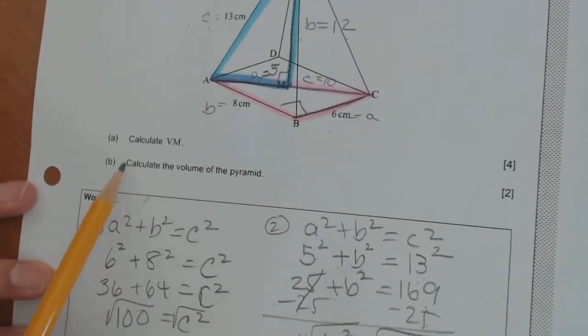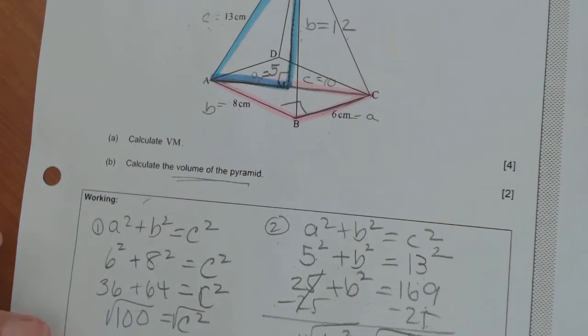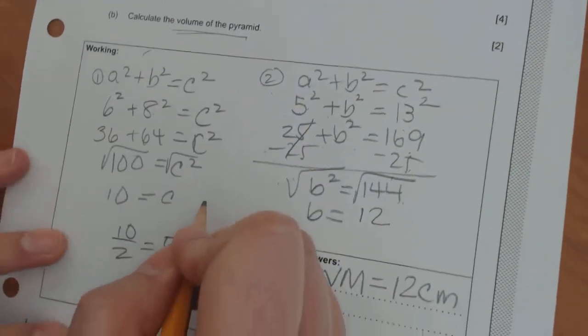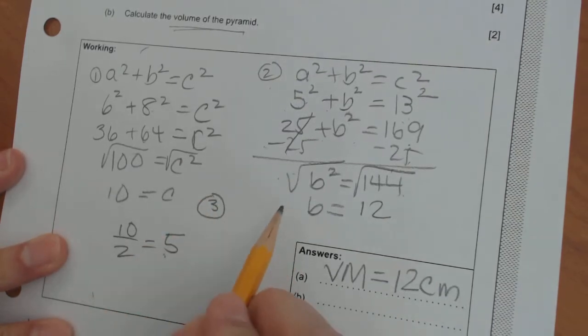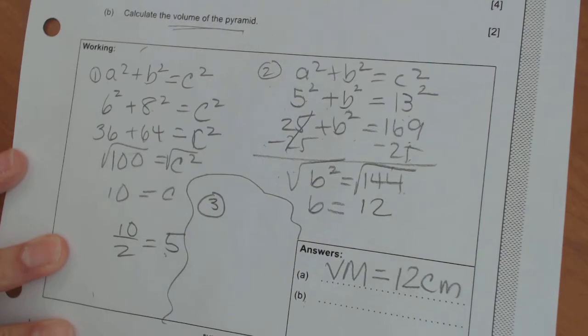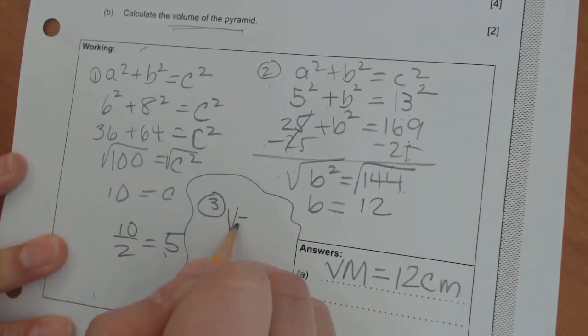Part B, calculate the volume of the pyramid. When they say that, they don't expect you to know volume. So what you're going to have to do is you're going to have to go in your formula book. So the third thing that we're going to do is you're going to have to go to your formula book. Now go to your formula book and look up volume of a pyramid.